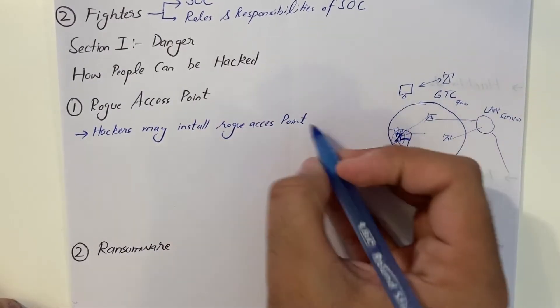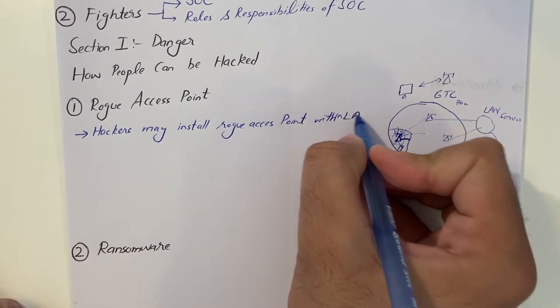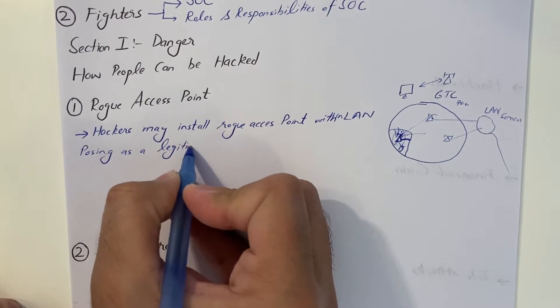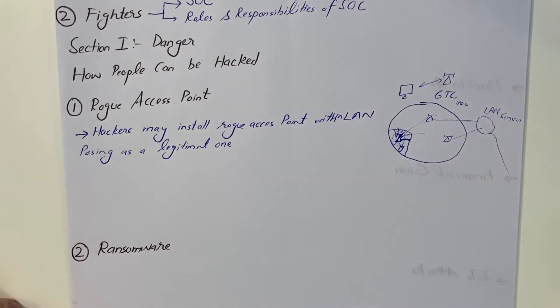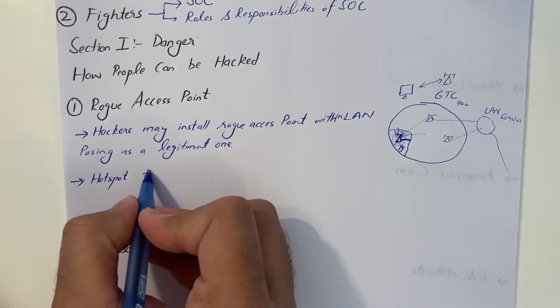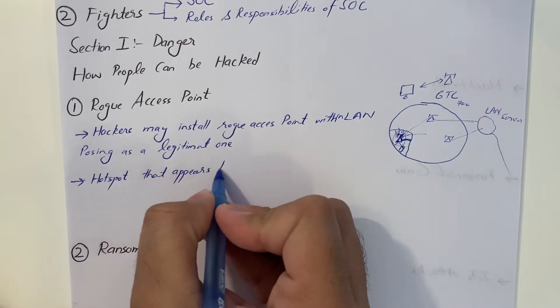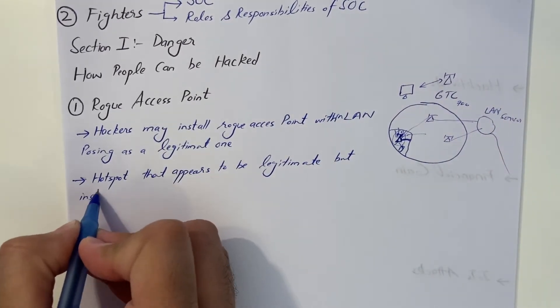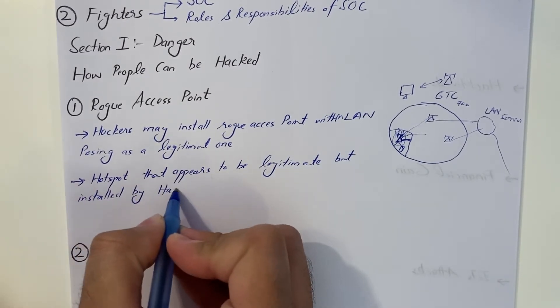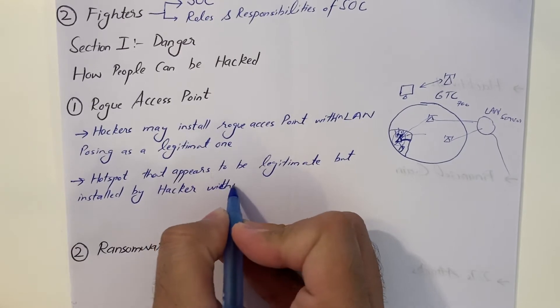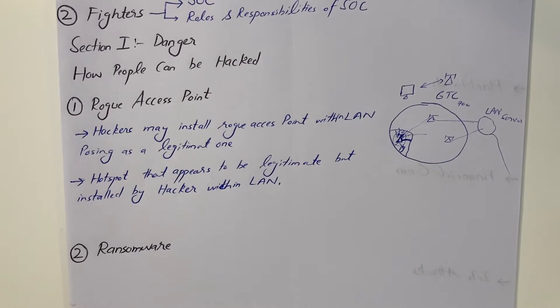Rogue access point is when hackers may install rogue access point within local area network, posing as a legitimate one. Or you can define it as a hot spot that appears to be legitimate, but installed by hacker without authorization within local area network, without permission of local area network administrator.